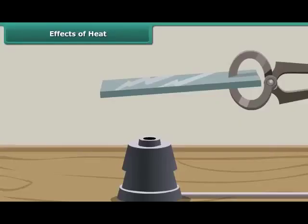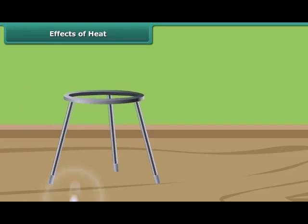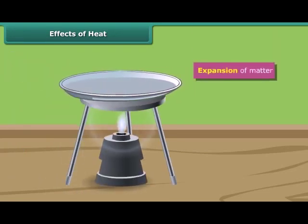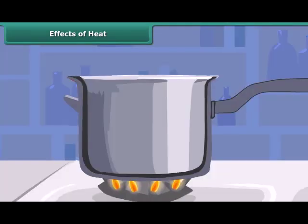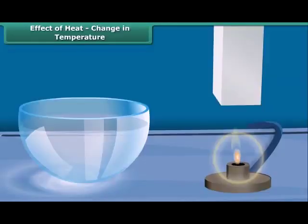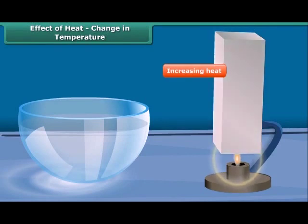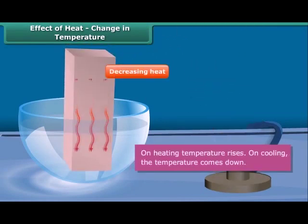When an object is heated, it undergoes many changes. The object becomes hotter. The object may expand or contract in size. A substance may change its state when heated. For example, water changes into water vapor on heating. We observe a change in temperature on heating — temperature rises and on cooling, the temperature comes down.